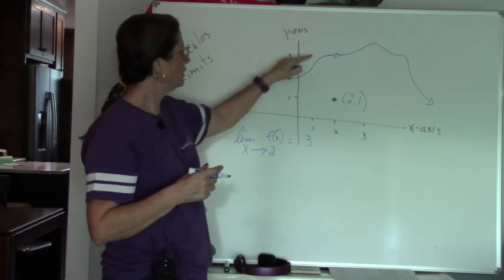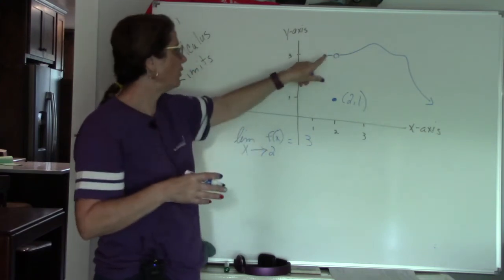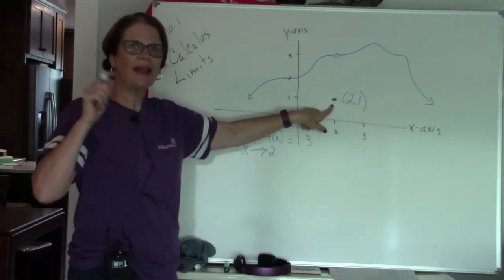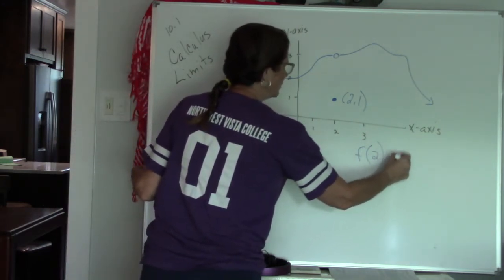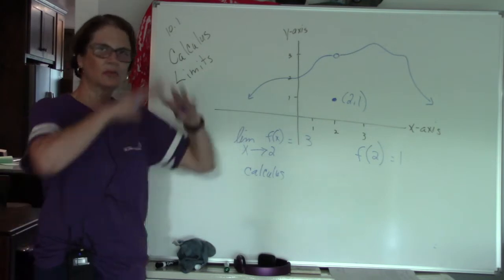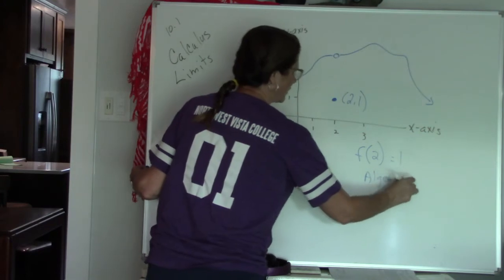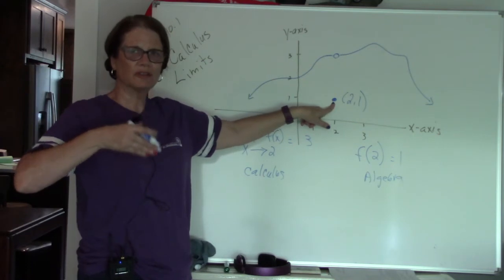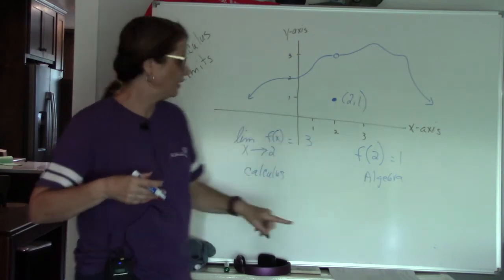So that means I have a limit: the limit as x approaches 2 of f(x) equals 3. This function does have a limit — it is approaching a certain value. I don't care what's going on at that value; I just want to know what's happening around it. The algebra says that at x = 2, the function value is 1. So this is the calculus version — what's happening around the point — versus algebra, which only cares about what the function actually equals at 2.